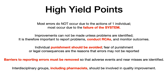Point two: improvements can't be made unless problems are identified, so it's important for a healthcare system to allow reporting of problems, conduct RCAs, and monitor outcomes. Point three: punishment needs to be avoided — the fear of punishment or legal consequences is a big reason why people might not report errors, so you have to remove barriers to reporting and avoid punishing individuals. Point four: barriers to reporting must be removed so adverse events and near misses are identified. And lastly, interdisciplinary groups — including pharmacists, a big high yield point — must be involved in quality improvement. It's not just a doctor; it's a doctor, nurse, case manager, pharmacist, administrator, and legal person. Include pharmacists — high yield for USMLE and Comlex. Best of luck.